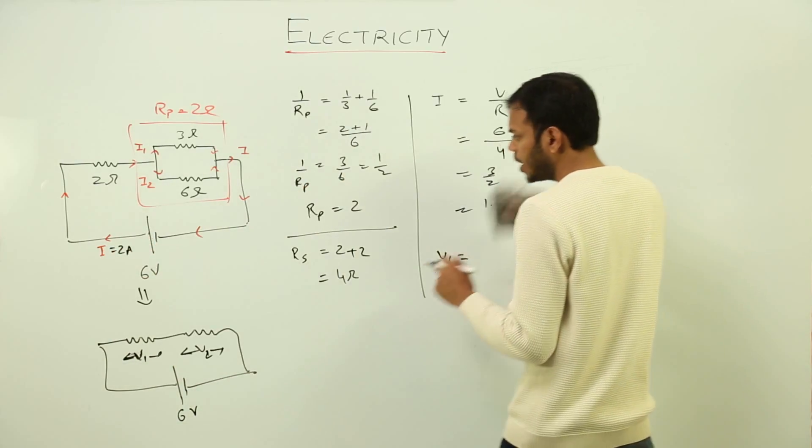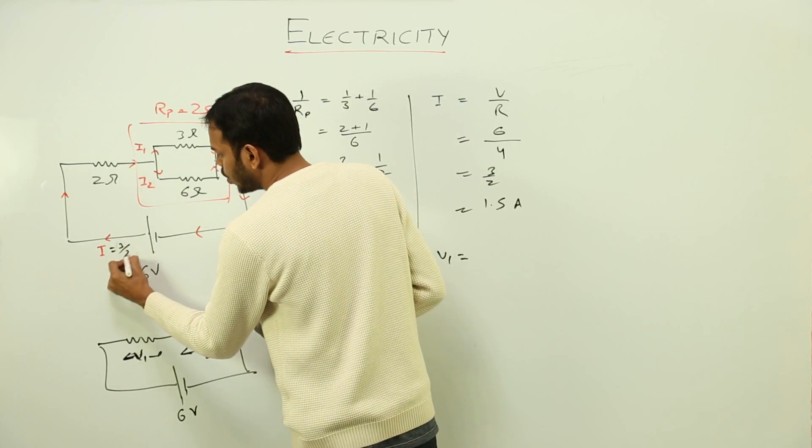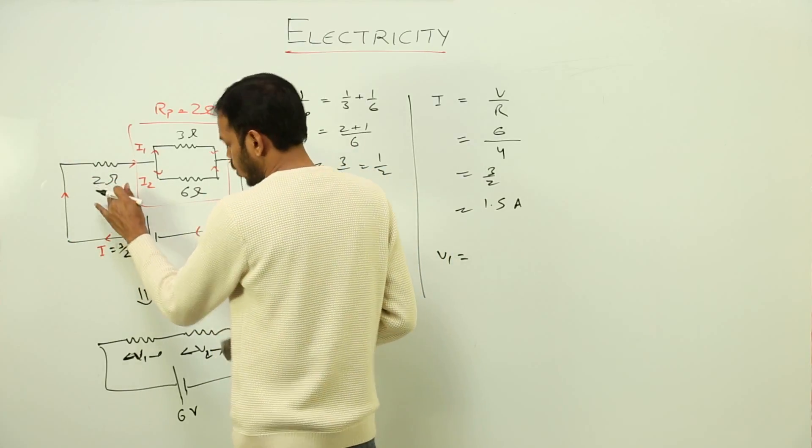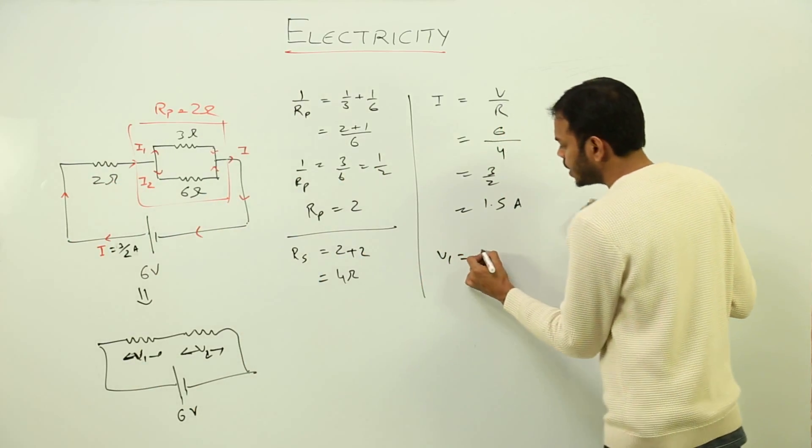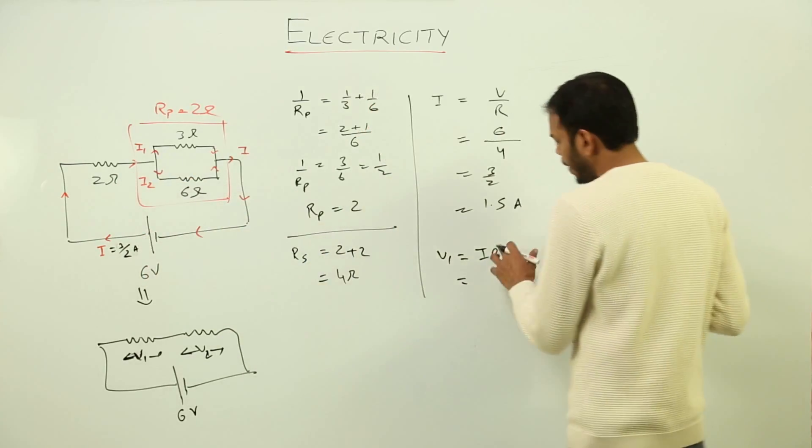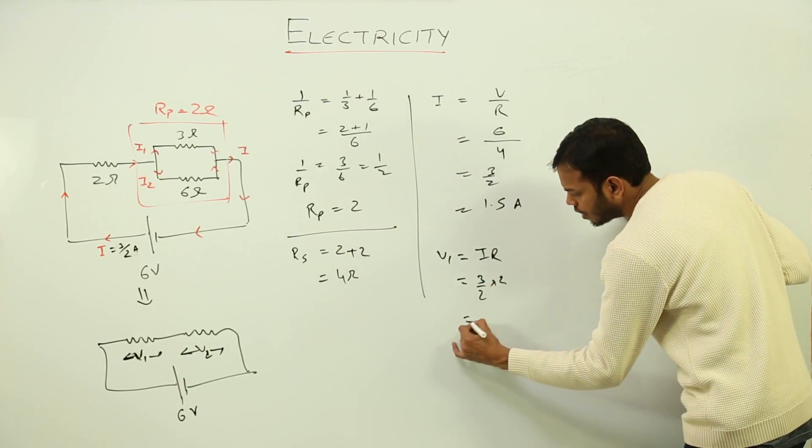So V1 would be equal to current into resistance. What is current? The current flowing through the main current is 3 by 2 amperes. So 3 by 2 into 2, using the formula V is equal to IR. Current flowing through this resistor is 3 by 2 amperes, and the value of resistance is 2. So 3 by 2 into 2 that gives me 3 volts.